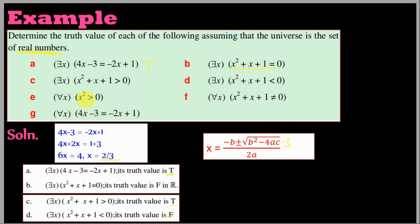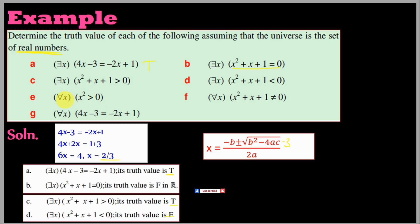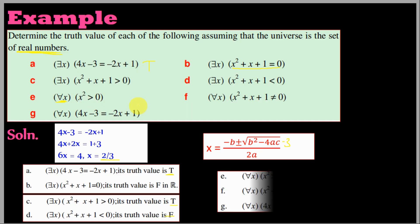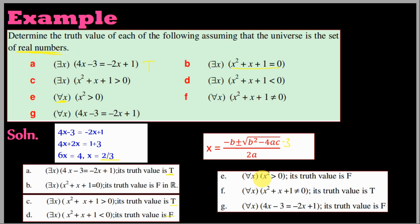When x equals 0, we have 0 squared equals 0, which is not greater than 0. So x equals 0 does not satisfy the condition x squared greater than zero. Since we found a counterexample, the universal statement 'for all x, x squared greater than zero' has truth value FALSE.